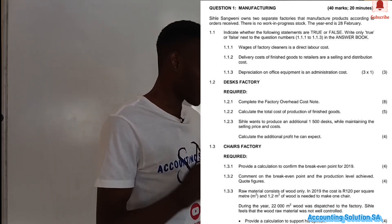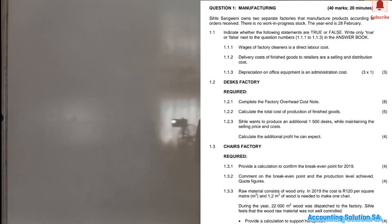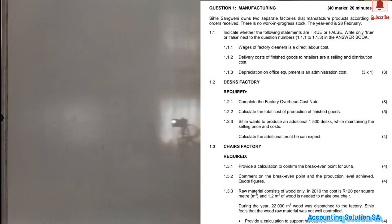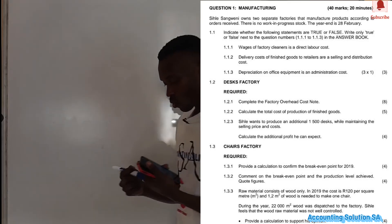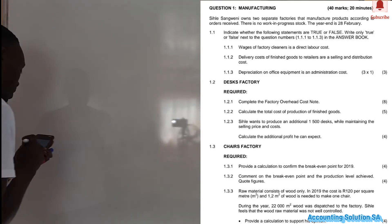Let's go through the questions. Question 1.2.1 under the desk factory: complete the factory overhead cost note. Then 1.2.2 is the total cost of production of finished goods. And 1.2.3: since they want to produce an additional 1,500 desks while maintaining the selling price, calculate the additional profit you can expect. After completing all of this, we'll move on to the chairs section.